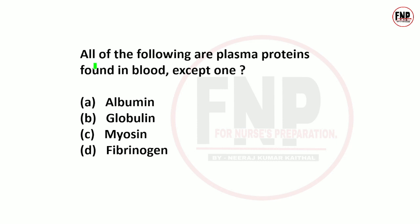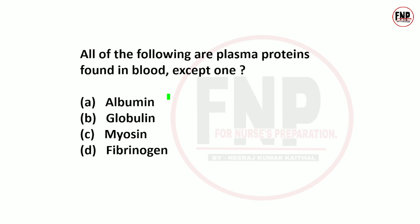Next question: All of the following are plasma proteins found in blood except one. You need to identify which of the four options — albumin, globulin, myosin, fibrinogen — is not a plasma protein. Plasma is the liquid portion of blood.